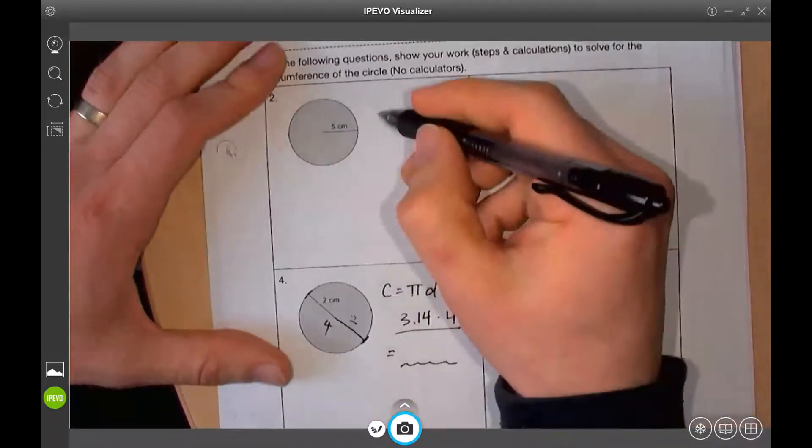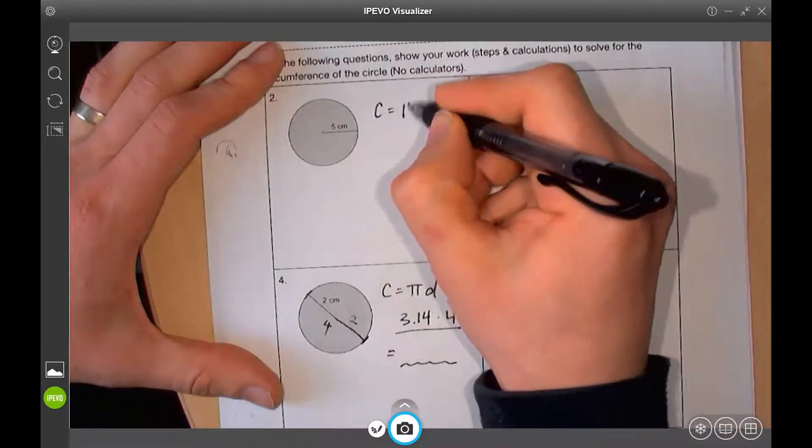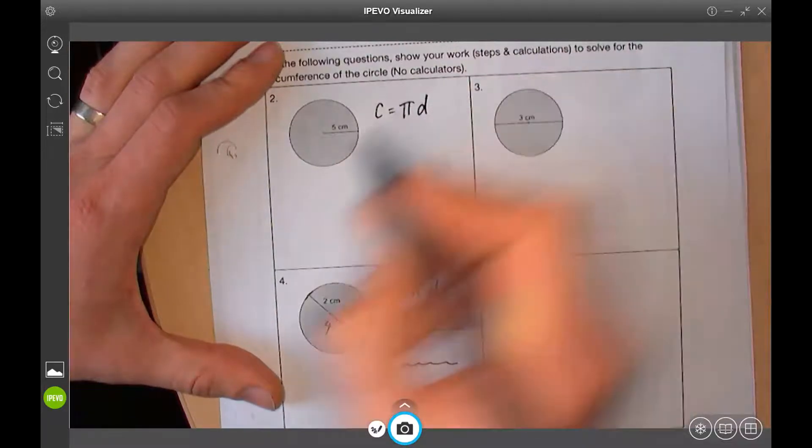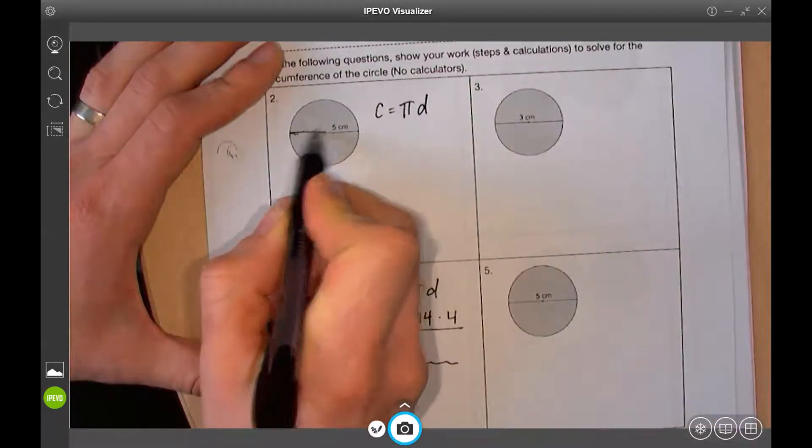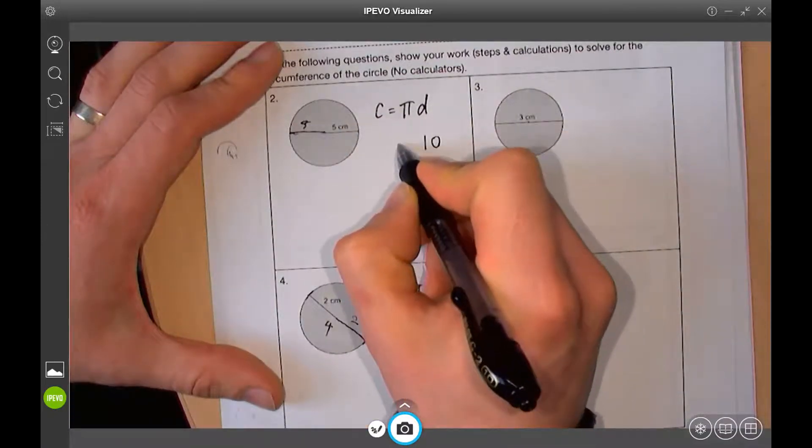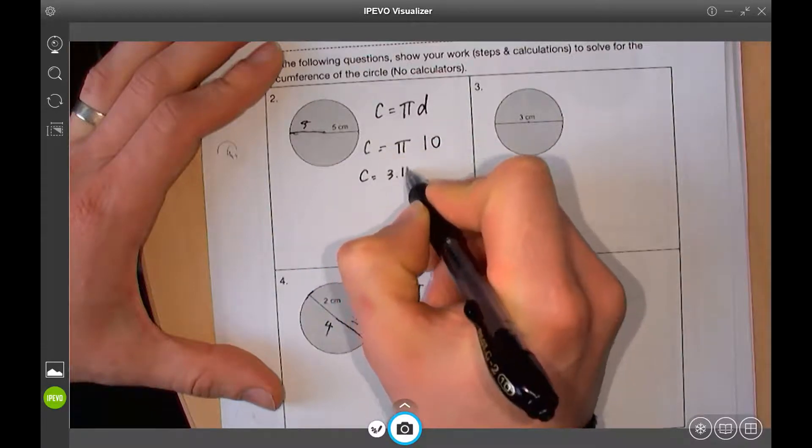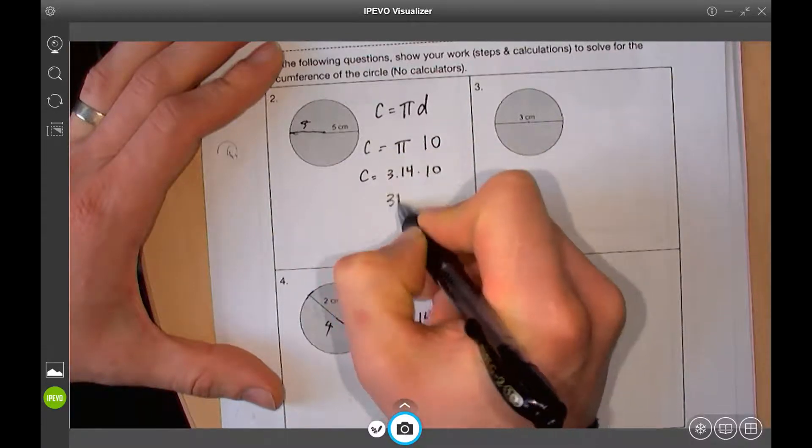So, going back to this one up here, this one shows you, is pi D. D again, all the way across would be 5 plus 5 would be 10. So, our diameter is 10, and, oops, pi is 3.14 times 10 would be 31.4.